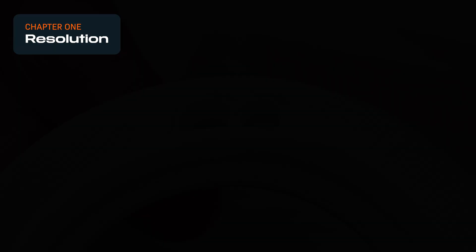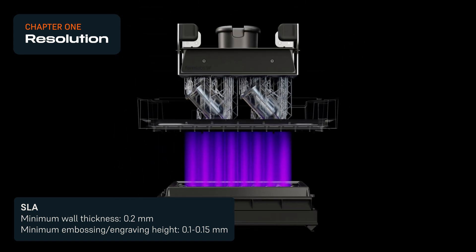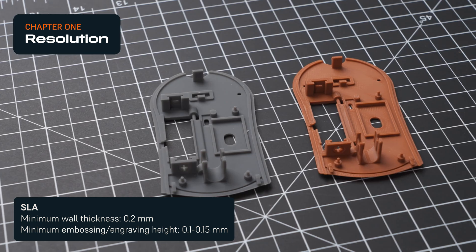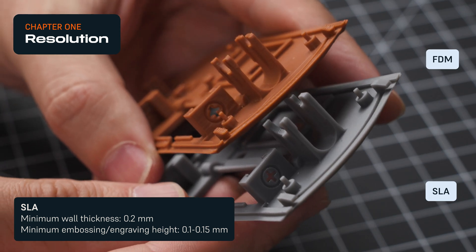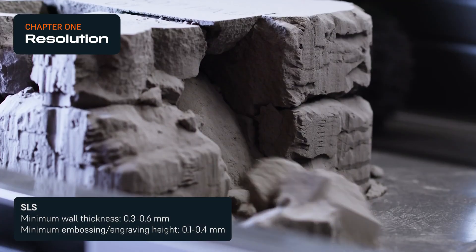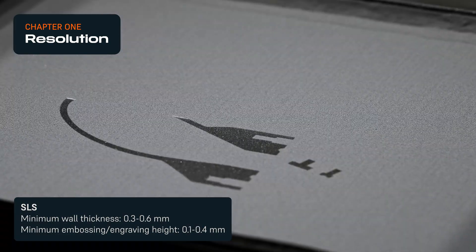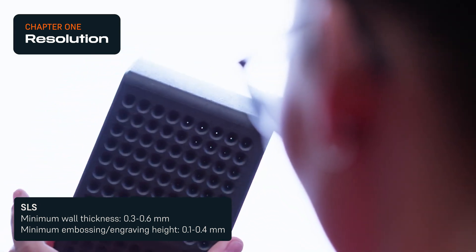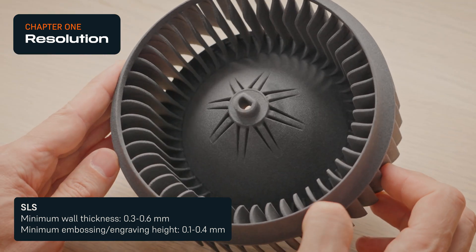With SLA 3D printers, the light source that cures the resin can be very precisely directed. SLA is the highest resolution 3D printing technology capable of resolving extremely fine details. SLS 3D printers form parts by using a high-powered laser to sinter together particles of polymer powder. SLS can resolve fairly small features, but certain textures can be affected by the grainy surface finish of printed parts.